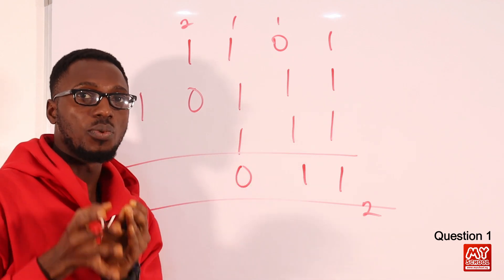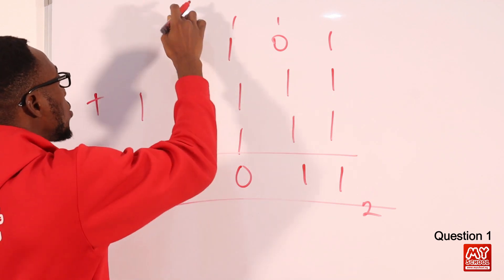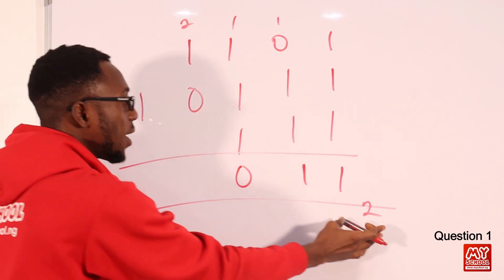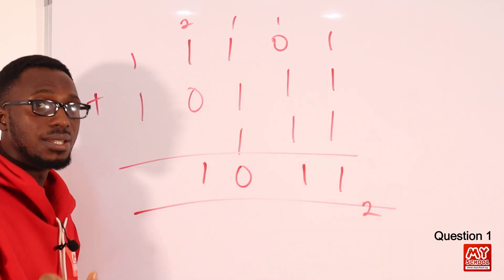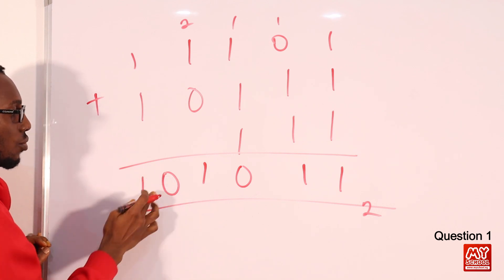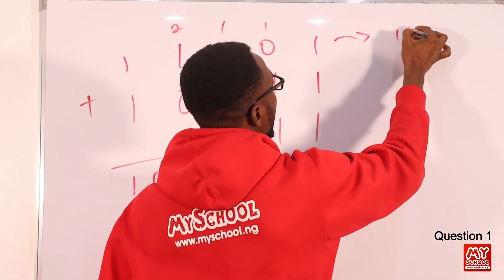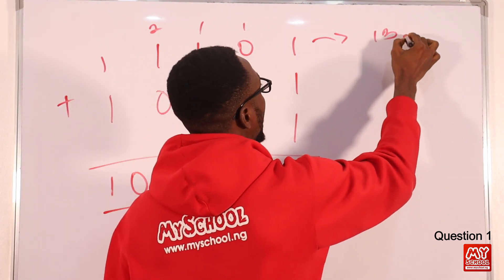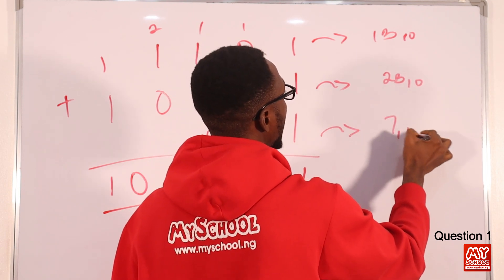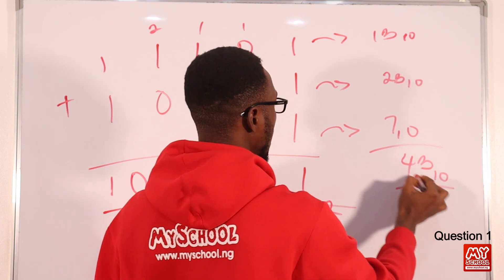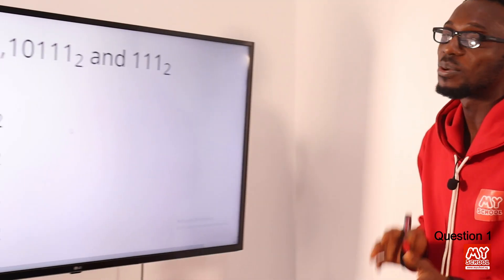More video explanation about this concept is available in the topic by topic video. Remember you can't have 2 in base 2. So I have 2 plus 1 that is 3, plus 0 that is 3. 3 in base 2 is 1 remainder 1. Then 1 plus 1 is 2; 2 in base 2 is 1 remainder 0. So I have 1, 0, 1, 0, 1, 1 in base 2.